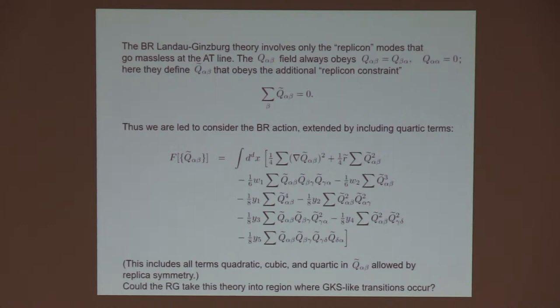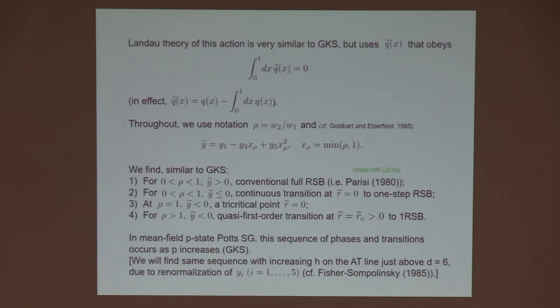The Landau theory of this turns out to be very similar to GKS. First of all, we have to use Q tilde of X instead of Q of X, and because of that replicon constraint, the integral of Q tilde is zero. Basically, we're subtracting off the integral of Q of X to get Q tilde. I'm going to describe the results of this Landau theory for the previous action in terms of the ratio rho of W2 over W1. Both of those are positive. Another combination is Y tilde, which is Y1 minus Y3X plus Y5X squared. X is basically the breakpoint right at the transition. It's the minimum of either rho and 1.